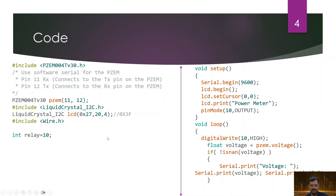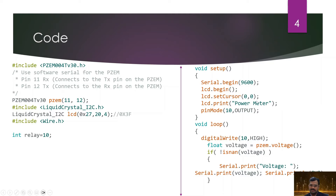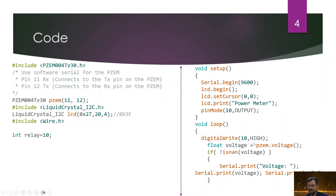In the setup function, we configure the serial port with a baud rate of 9600, initialize the LCD for displaying all electrical parameters, and display 'Power Meter'. Pin 10 is set as output for the relay. At the beginning of the program, I enable the relay so it stays on at all times unless an abnormal condition occurs.